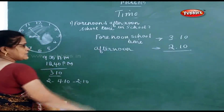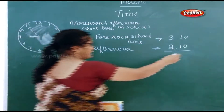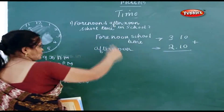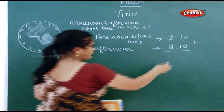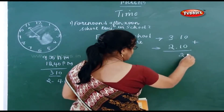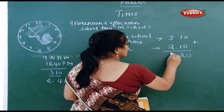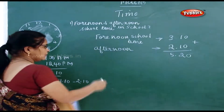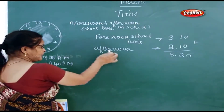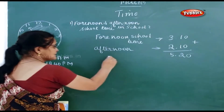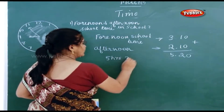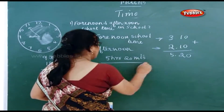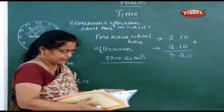So both timings you have to add. When you add, 1 plus 1 is 2, and 3 plus 2 is 5. So the forenoon school time and the afternoon school time combined is 5 hours and 20 minutes.